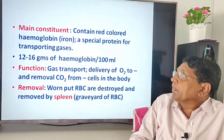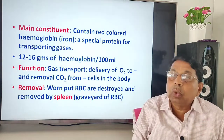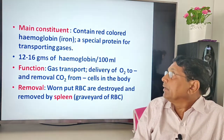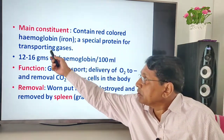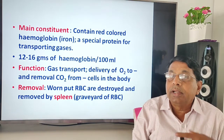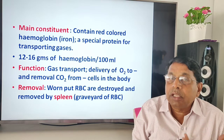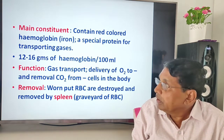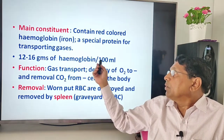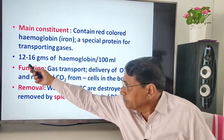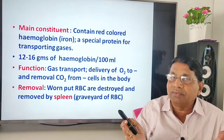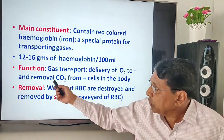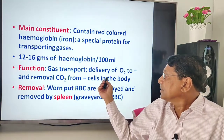The main content of RBCs is the red-colored pigment known as hemoglobin. The main constituent of hemoglobin is iron — it is a special protein for transporting gases, mainly oxygen and carbon dioxide. When hemoglobin combines with oxygen, it forms oxyhemoglobin. A normal person has 12 to 16 grams of hemoglobin per 100 ml of blood, though this may slightly vary between males and females. The function is gas transport: delivery of oxygen to cells and removal of carbon dioxide from cells.